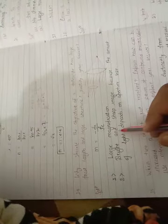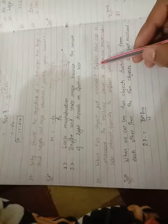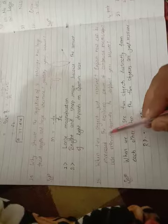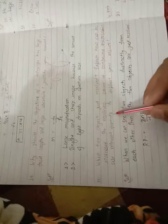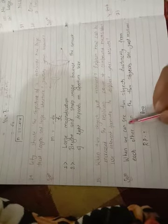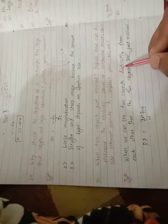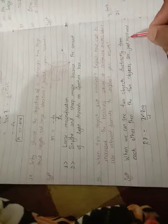Question 15: When two objects are just resolved, explain how we can increase the resolving power of compound microscope. Use relevant formula to support your answer. When we can see two objects distinctly from each other, then the two objects are just resolved.